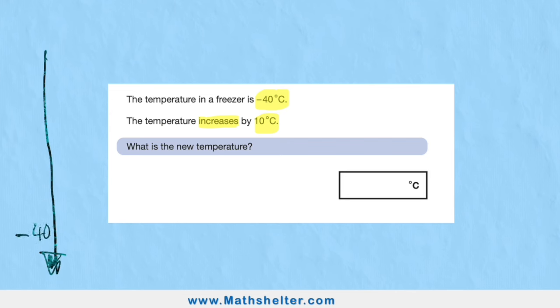If we're at minus 40, that means we're miles down here on our temperature gauge at minus 40. If it increases, it's not going to get colder, that would be decrease. It's going to be getting hotter. If it's getting hotter 10 degrees, it's going all the way to minus 30. So our new temperature is minus 30. They've been very kind and giving you the units so you can't make an easy mistake.